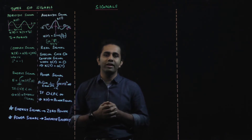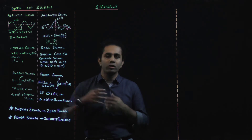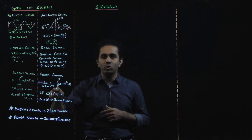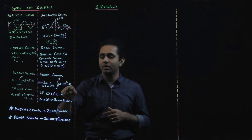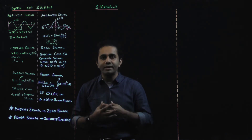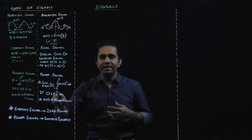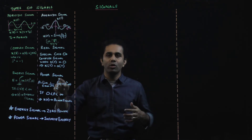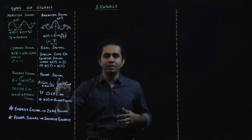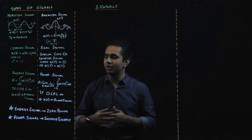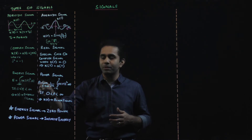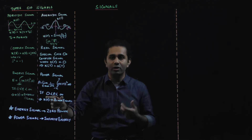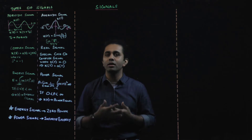We also have a power signal. The average power of a signal is defined as: limit as τ tends to infinity of 1/(2τ) times the integral from minus τ to τ of X(t)² dt. This averages the square of the signal over the total time period. If this average power P is greater than 0 but less than infinity — meaning P has a finite value — then X(t) is a power signal.